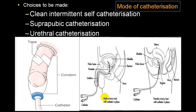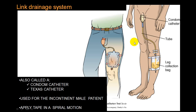Diagrams show the different types of catheterization: external (condom) catheterization versus urethral catheterization, in male and female, and indwelling catheters for long-term use. The condom catheter bag is usually tied on the thigh or lower limb; the condom catheter is also called a Texas catheter or external catheter.